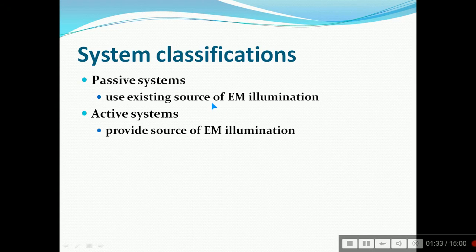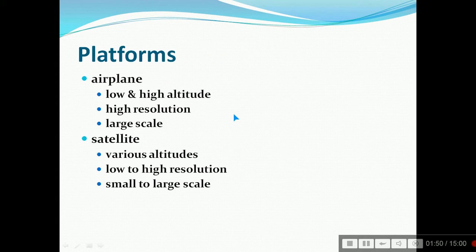As I earlier mentioned, passive systems and active systems are the system classifications. Passive systems use existing source of electromagnetic illumination, while active systems provide their own source of electromagnetic illumination.